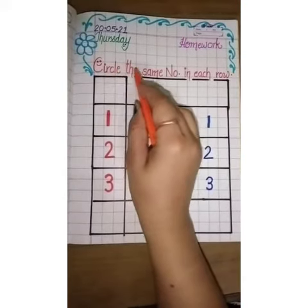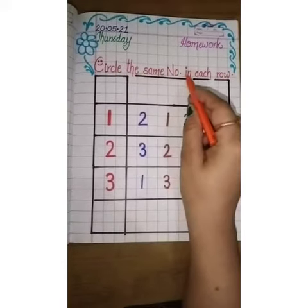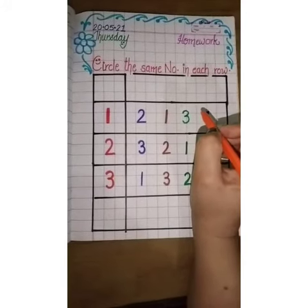Kids, today we will circle the same number in each row. What do we do now?